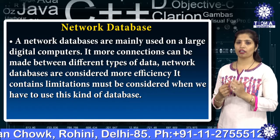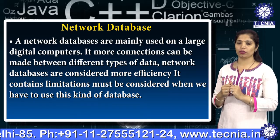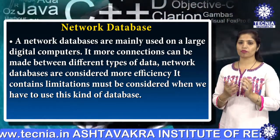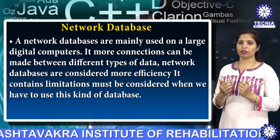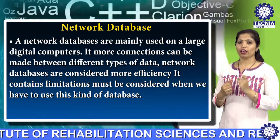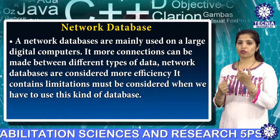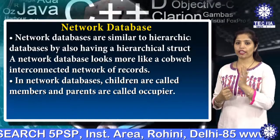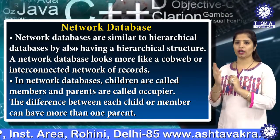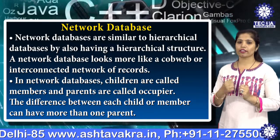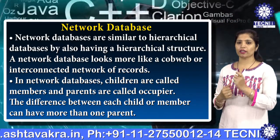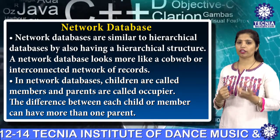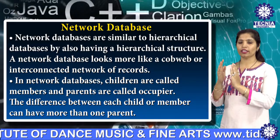The second type is the network database. Network databases are mainly used on large digital computers where more connections can be made between different types of data. Network databases are considered more efficient but contain limitations that must be considered when using this kind of database. Network databases are similar to hierarchical databases in having a hierarchical structure.